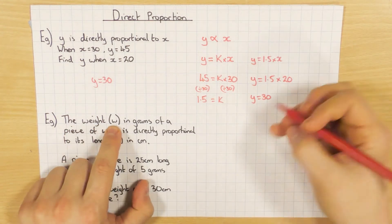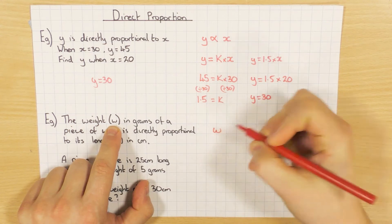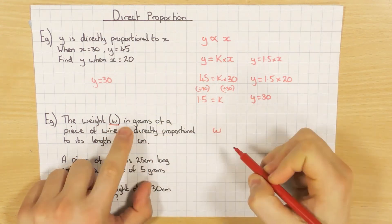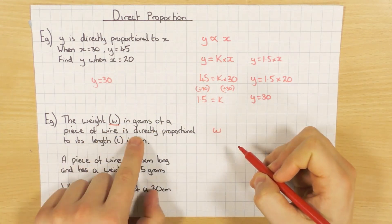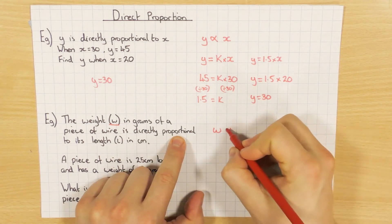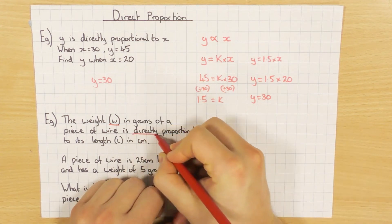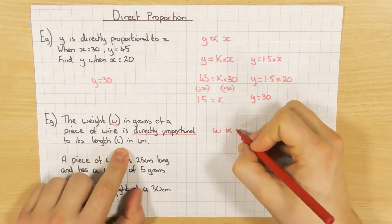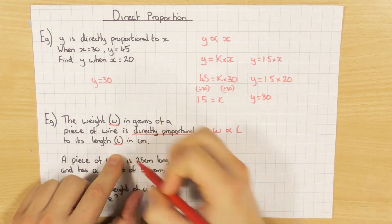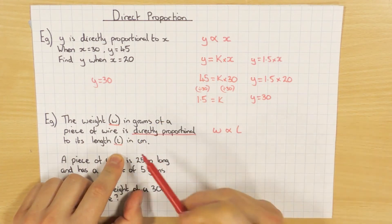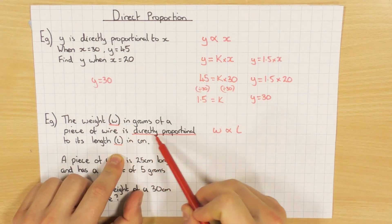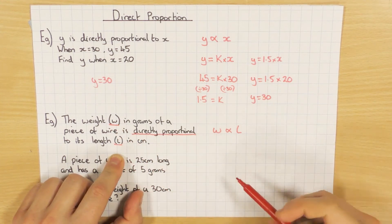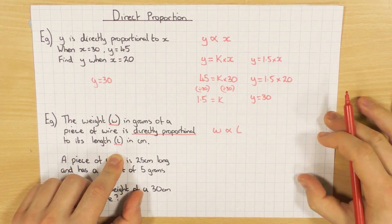The weight w, I'm going to put w down because that's a key bit there. In grams of a piece of wire is directly proportional, directly proportional, to its length l. And that's what I care. So there's lots of waffle going on there. I don't really care about it. All I care about is w is directly proportional to l. That's all I want. So there we go. There's the first step.